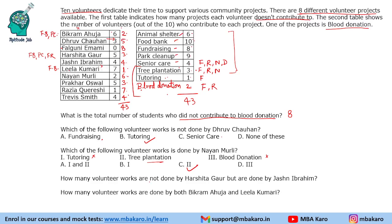How many volunteer works are not done by Harshita Gaur but are done by Jashan Abraham? Harshita Gaur is doing 3 projects and Jashan Abraham is doing 4 projects — there is 1 extra project. Jashan Abraham will automatically do those same 3 projects, and the projects with the highest contributors are Food Bank, Fundraising, and Park Cleanup. So Animal Center will be the extra project done by Jashan Abraham.